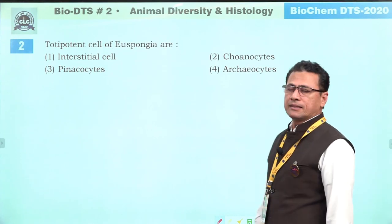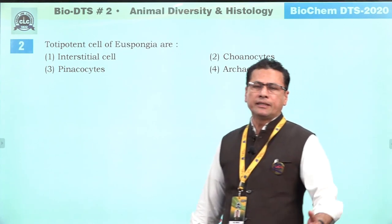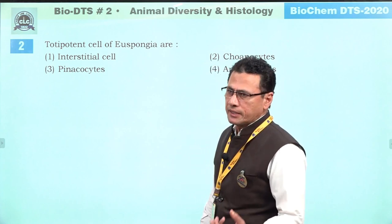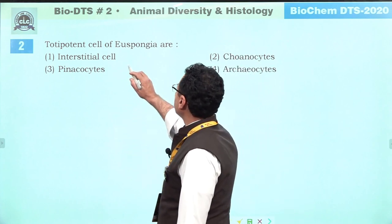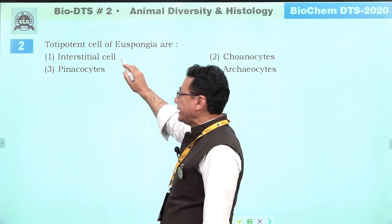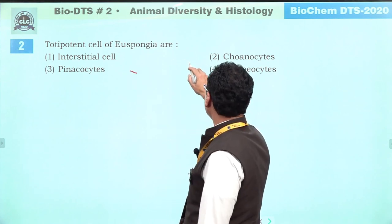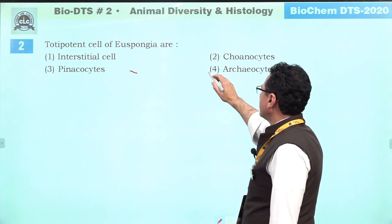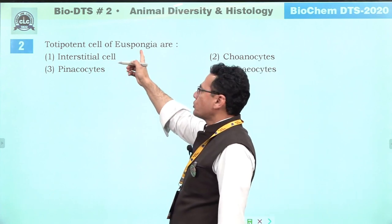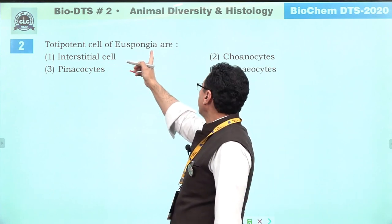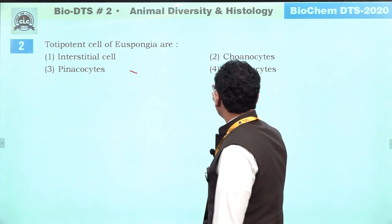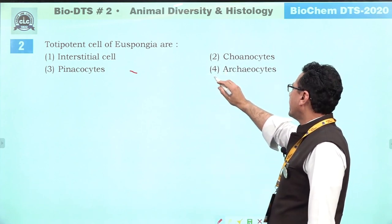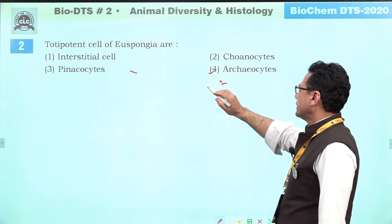Totipotent cells are cells which can give rise to the entire body of a new animal. These cells are interstitial cells in the case of cnidarians. In the case of sponges, we have archeocyte cells. This is a sponge, and these cells, if isolated, can give rise to the entire new animal — archeocyte cells.